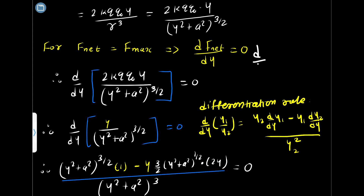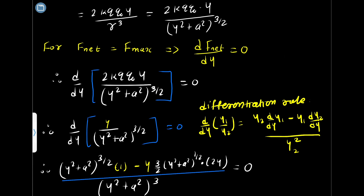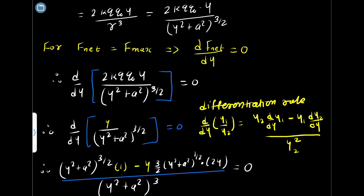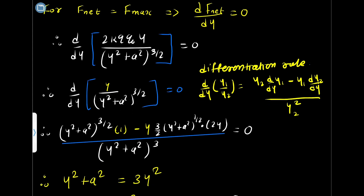We are differentiating two variable terms. Let y1 equal y (the numerator) and y2 equal (y squared plus a squared) raised to 3/2 (the denominator). Since both numerator and denominator are variable, we use the quotient rule: keep y2 as it is and differentiate y1, minus keep y1 as it is and differentiate y2, all divided by y2 squared.